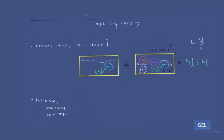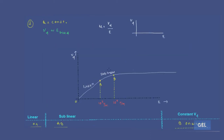So far we have covered the mobility versus temperature graph — impurity scattering and lattice scattering — and the mobility versus impurity graph. Now we move on to a very, very important graph: drift velocity versus electric field.